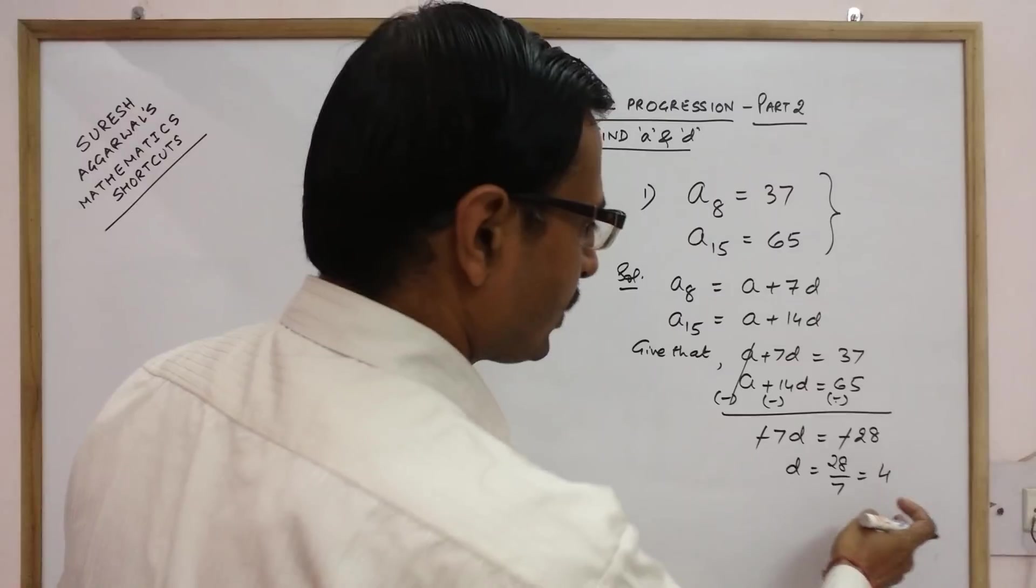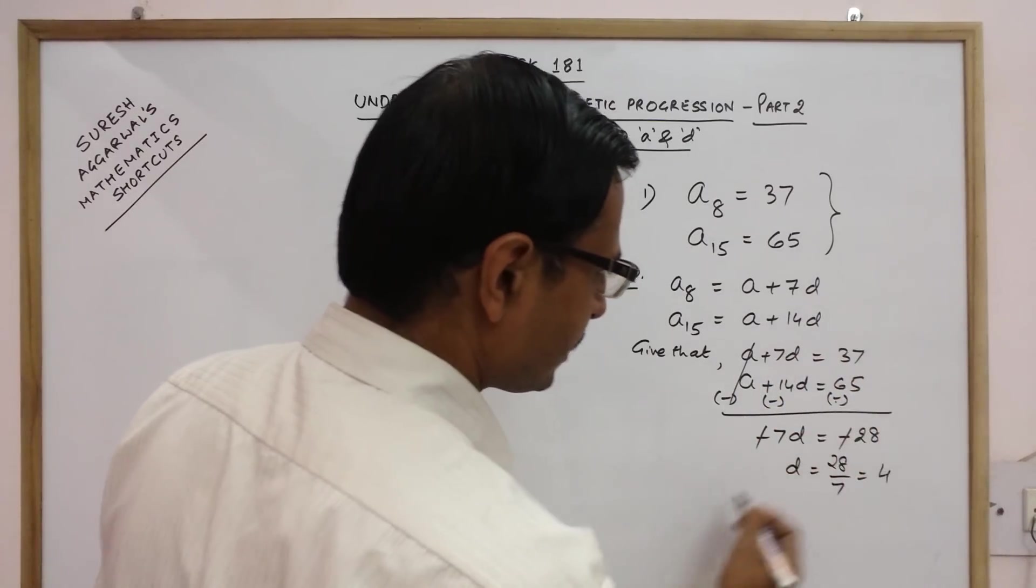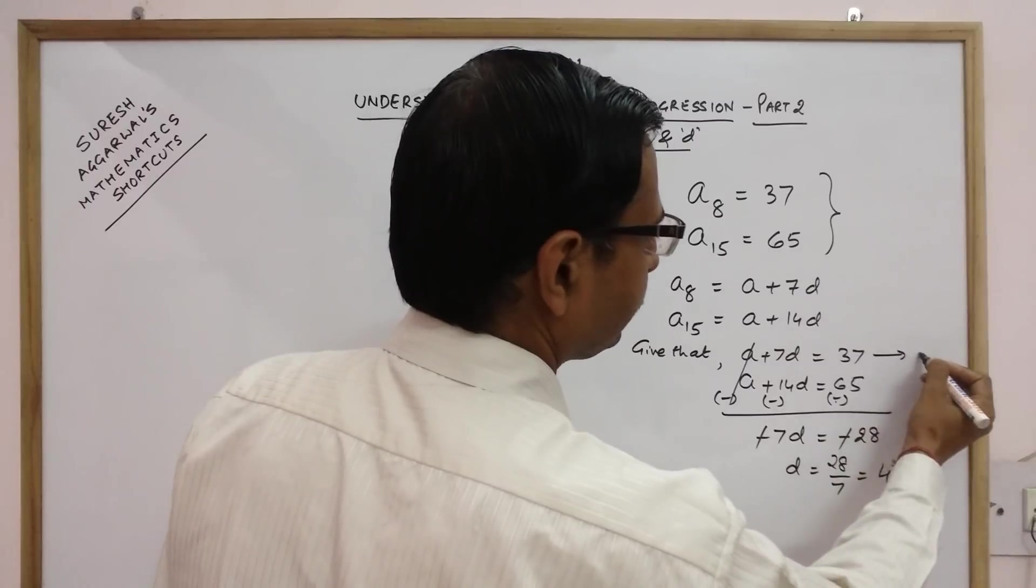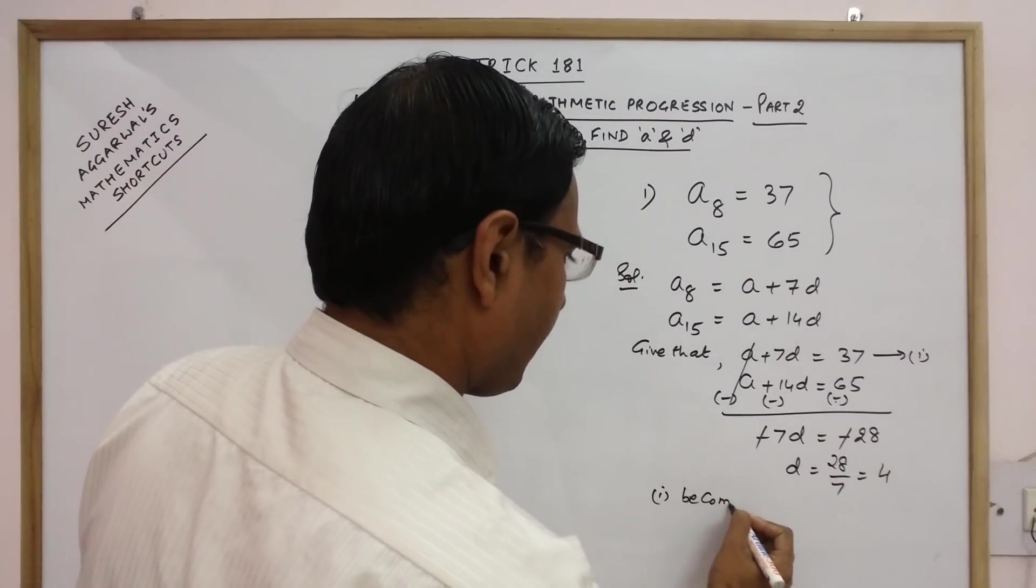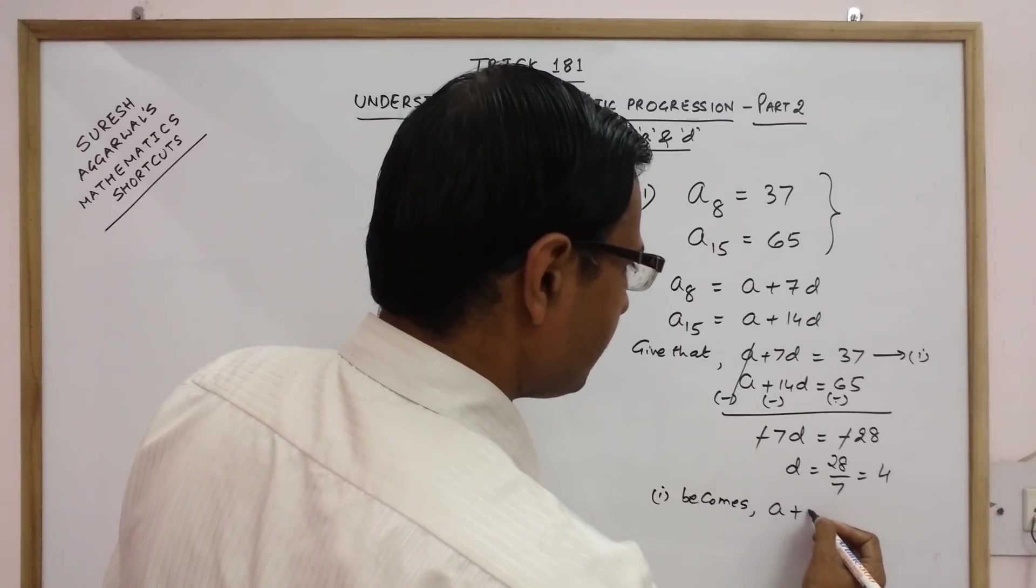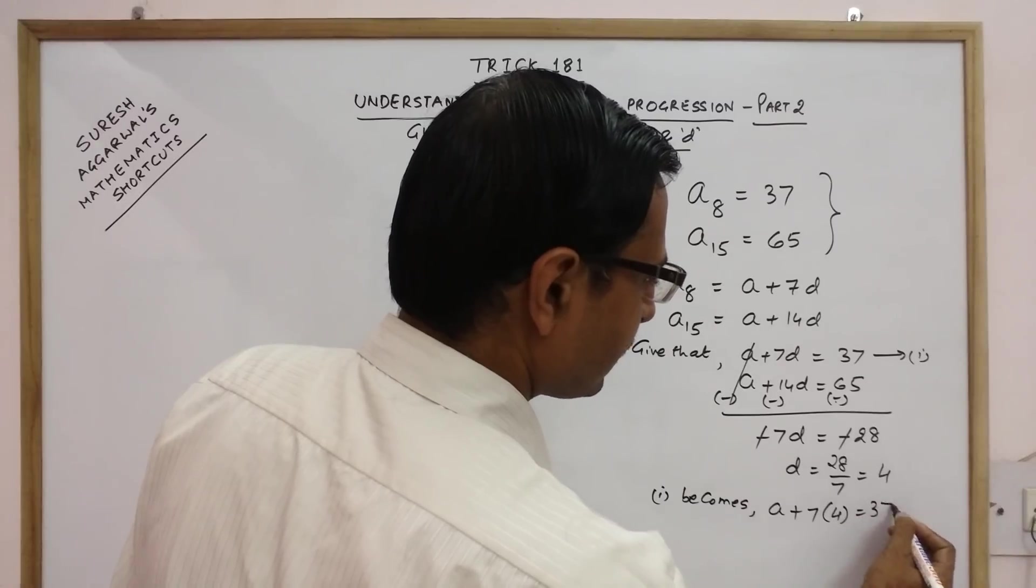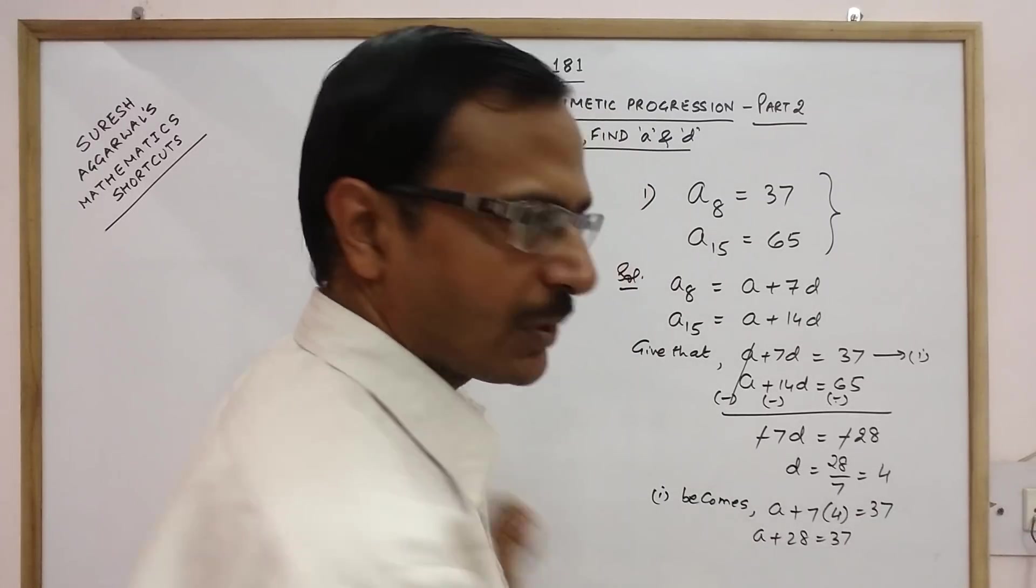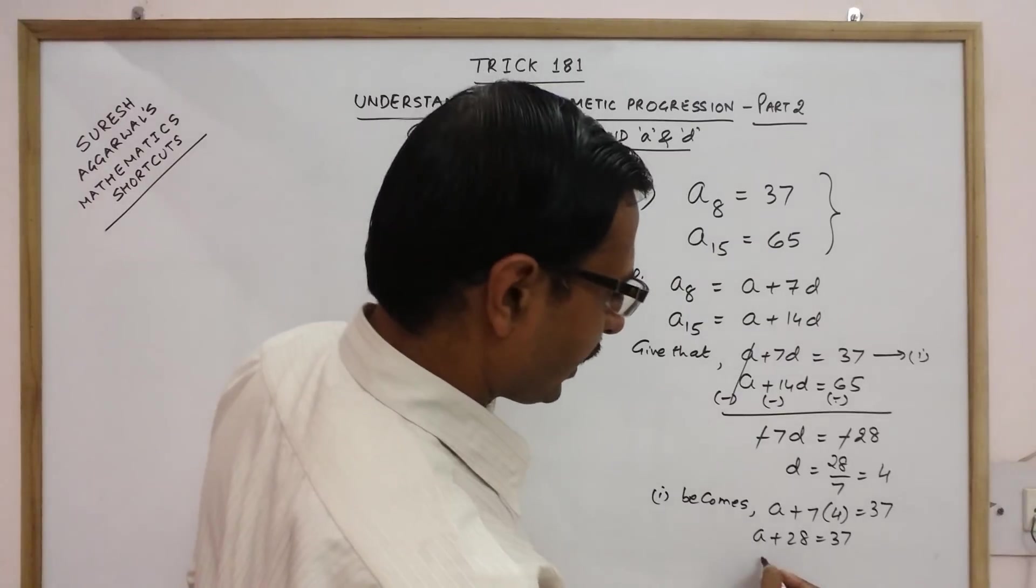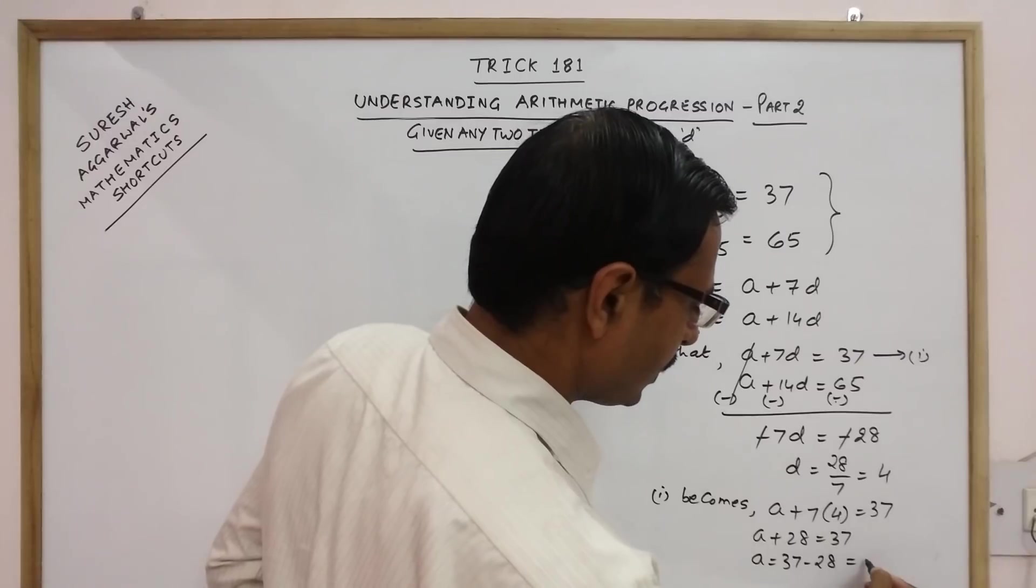Then we will substitute this value in any of these two equations. So we will take the first equation. So the first equation becomes A plus 7D, D is 4 equal to 37. So A plus 28 equal to 37. So here we have the answer for A that is 37 minus 28 which is 9.